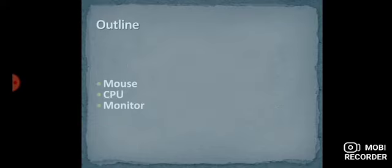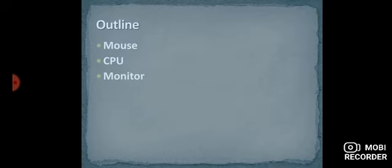Today's topics are mouse, CPU, monitor. These are the main parts of a computer. And yesterday we talked about keyboard. Keyboard is also a part of computer.